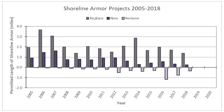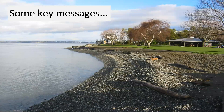There are many drivers of these trends. New armoring projects are down because of new regulations and a greater understanding of armor's impact to the nearshore environment. Removals are also increasing because of attention paid to impacts and the funding that follows. Bulkhead replacements are the most common project type, and we expect that trend to continue, especially considering the aging stock of existing armor.